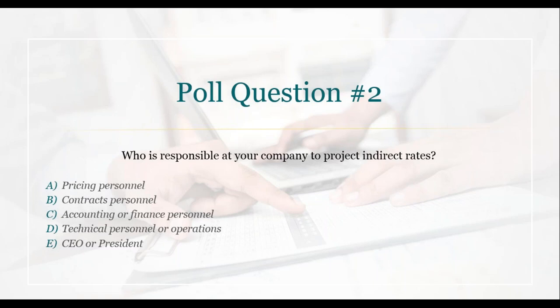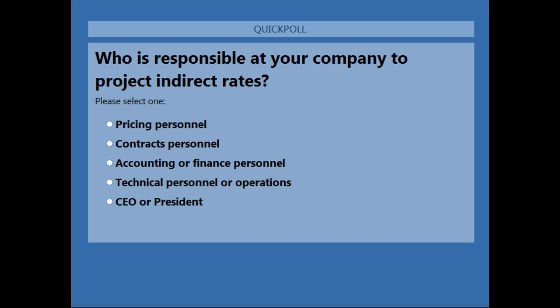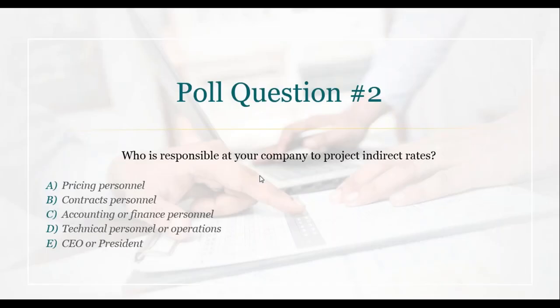We've reached our second polling question: Who is responsible at your company to project your indirect rates? Is it your pricing personnel, contracts personnel, accounting or finance, technical personnel, or the CEO or president? Please take a moment now to answer. While everybody's recording their answers, I'll provide the second CPE word. The second CPE word is 'finance,' F-I-N-A-N-C-E. Please jot these words down because you'll need them for the survey.